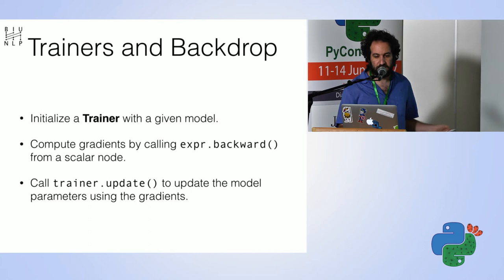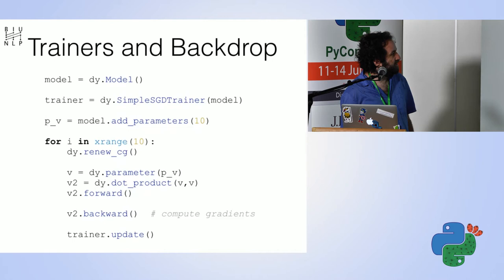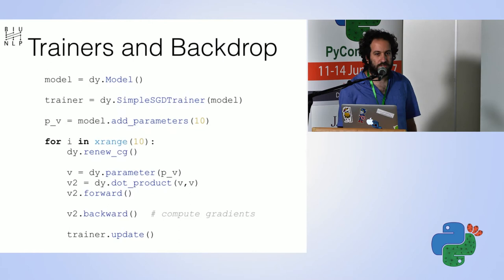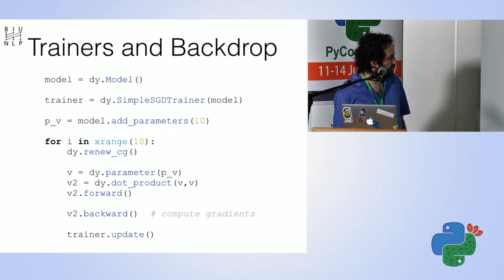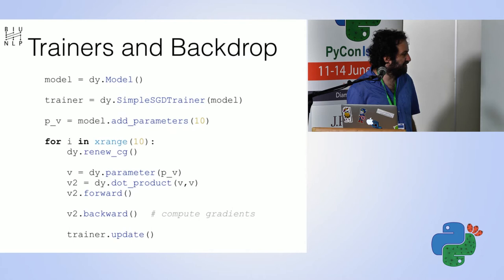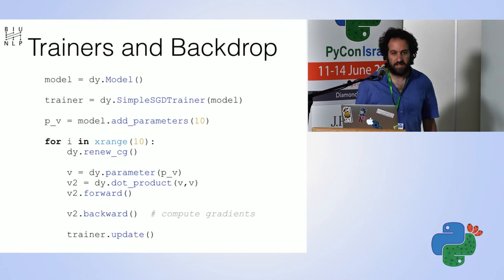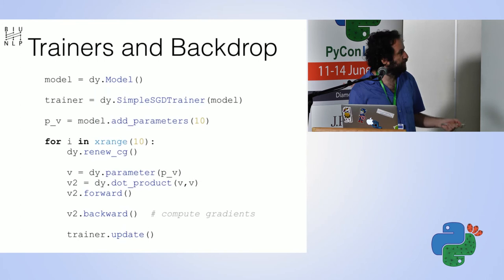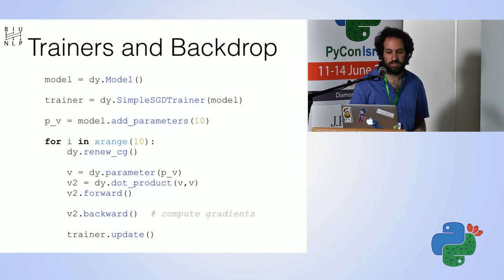For training: initialize a trainer with your model, compute gradients using expression.backward() on your loss expression, and call trainer.update(). Here is the code: I have a model, a trainer on this model, I add a 10-dimensional parameter vector, and then in a training loop I create a new graph, get the parameter expression, compute the dot product with itself, call forward to get the value, call backward to get gradients, and then update. This loop will optimize v such that its dot product with itself is low. You can switch the trainer line to get Adam or other optimizers.